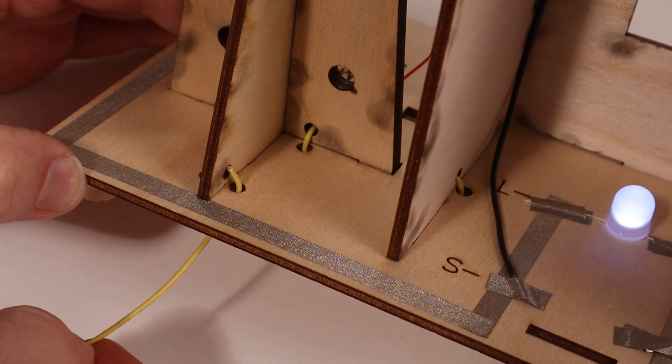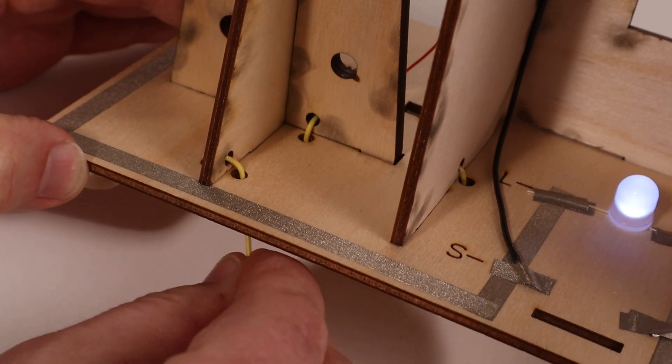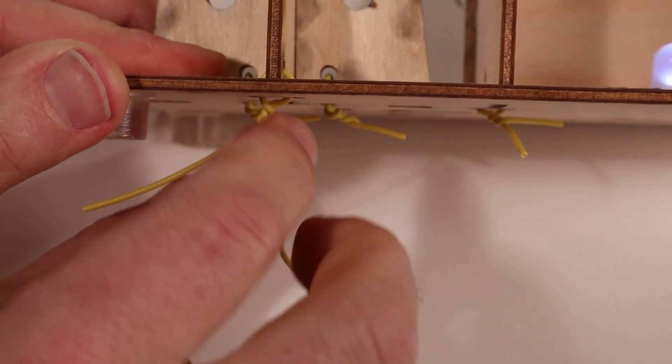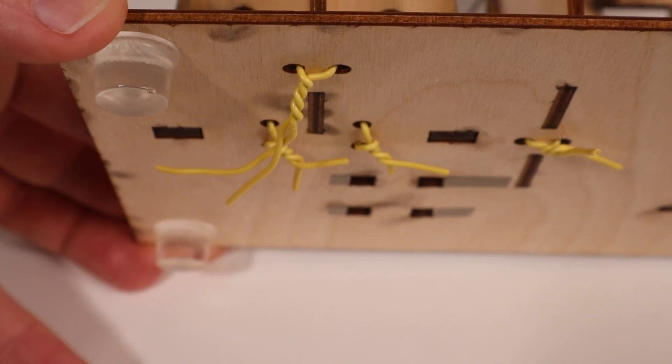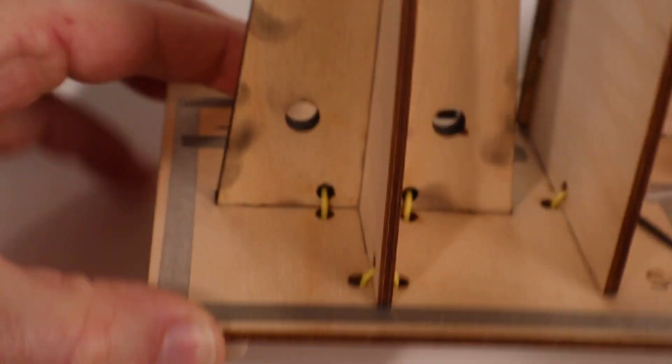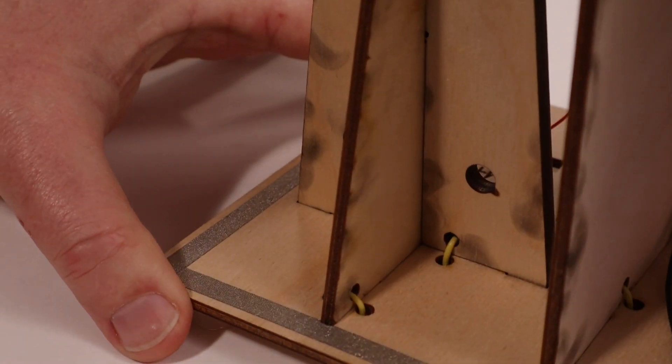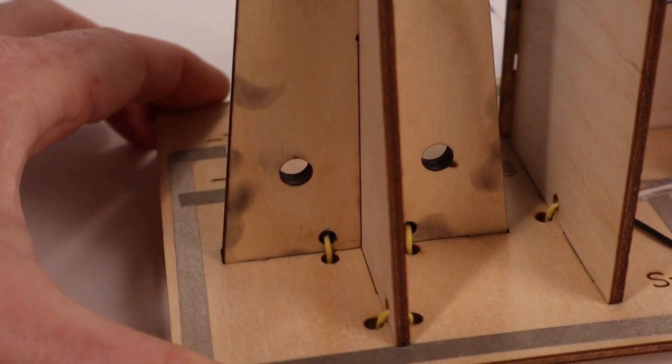The back of the tower also has a hole that matches up with two holes in the base. Thread a piece of wire through these holes and then twist it tight. This keeps the tower from tipping forward. When complete, the tower will be solidly in place with the slots and tabs and the three pieces of wire.